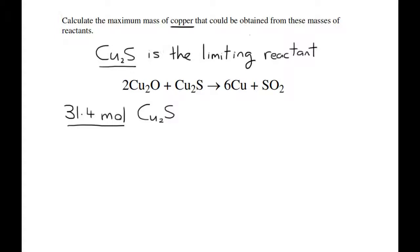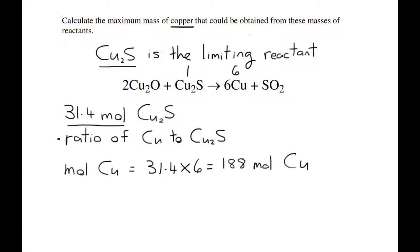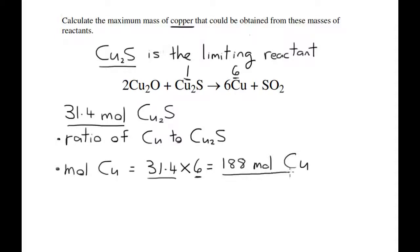Next, we have to look at the ratio of Cu to Cu₂S. If you look at the balanced equation, you can see it's a 1 to 6 ratio of Cu₂S to Cu. So in this step, you multiply the number of moles of Cu₂S, which is 31.4, times 6. That means we can produce 188 moles of Cu.